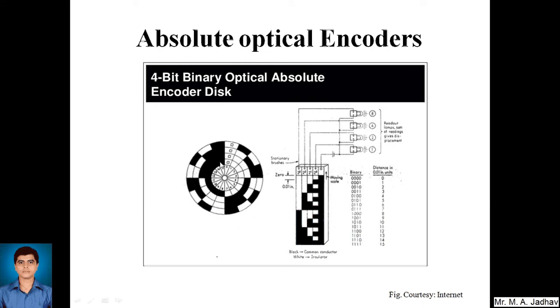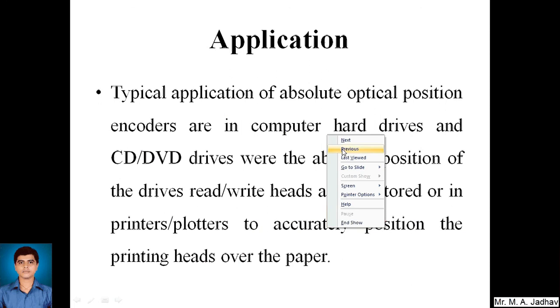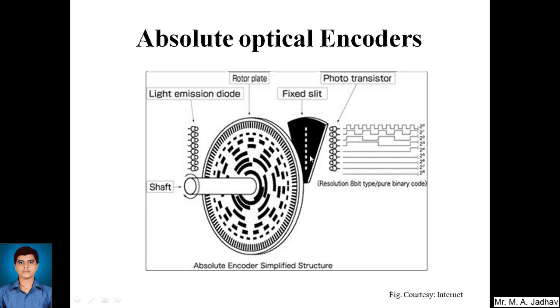There are 4 tracks, so we need 4 light sources and 4 light receivers. This is how it looks. Actually here it is not 4-bit but a resolution of 8-bit. So we are having 1, 2, 3, 4, 5, 6, 7, 8, eight light emitting diodes and 1, 2, 3, 4, 5, 6, 7, and 8, eight photo transistors or light receptors. This is a fixed slit through which the light is going to pass.